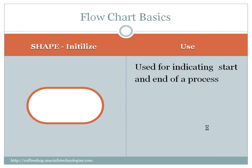So how the flow goes, how the program starts, how the program takes a diversion from one condition to another condition — everything will be explained through pictures. We have a shape here. This shape is called the initialized shape and it is used to start the process. It indicates the start or the end of the process.